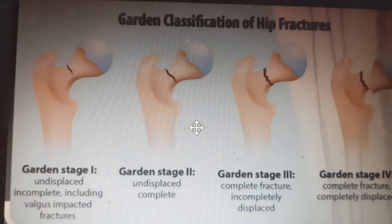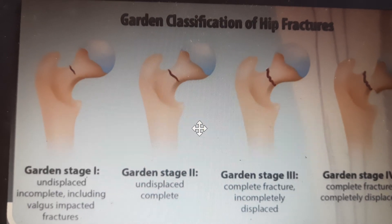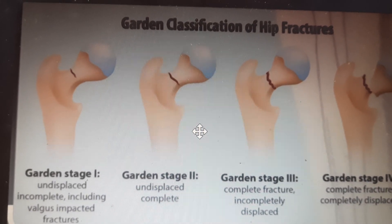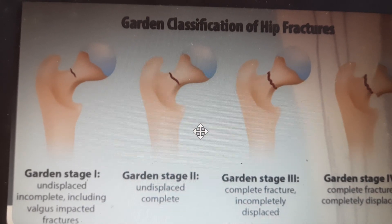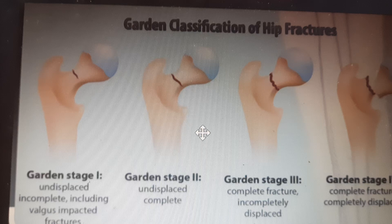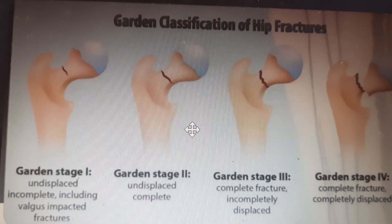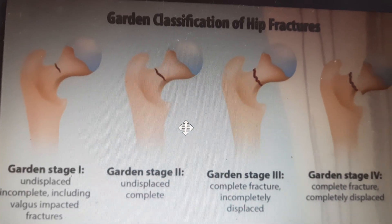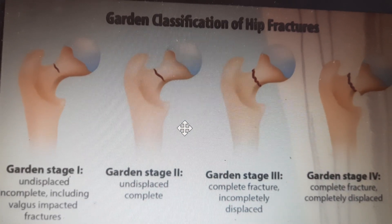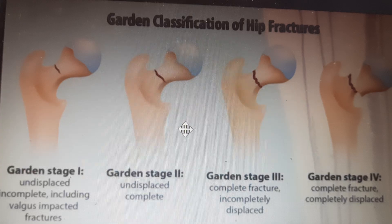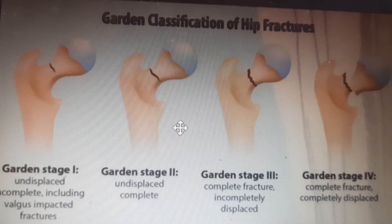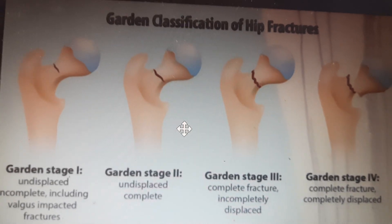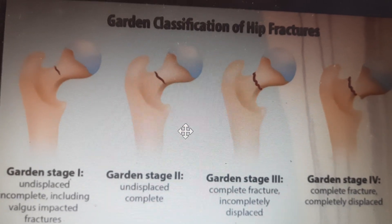To summarize: Garden stage 1 is an incomplete fracture — undisplaced and incomplete. Types 2, 3, and 4 are complete fractures. In type 2 it is undisplaced, type 3 is incompletely displaced, and type 4 is completely displaced.